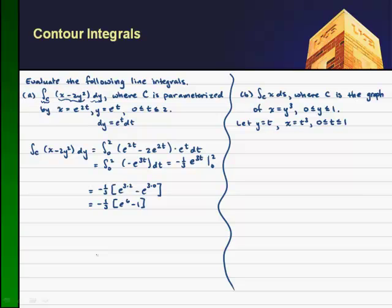And since I have this ds, I know I'm going to need the dx dt and dy dt. So my x dot, dx dt, if x is t cubed, it's going to be 3t squared, and y dot, which is dy by dt, since y is equal to t, it's just going to give me 1.